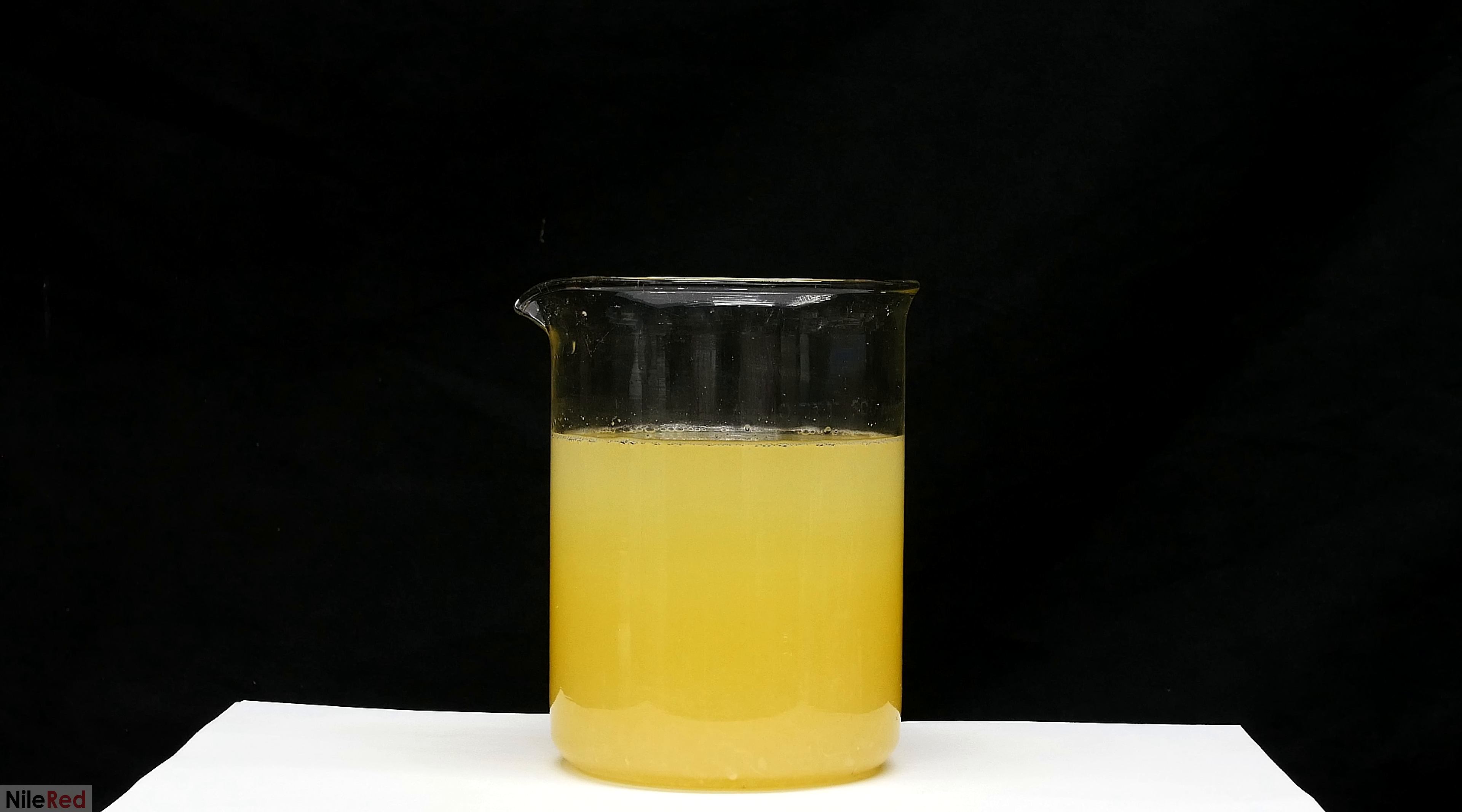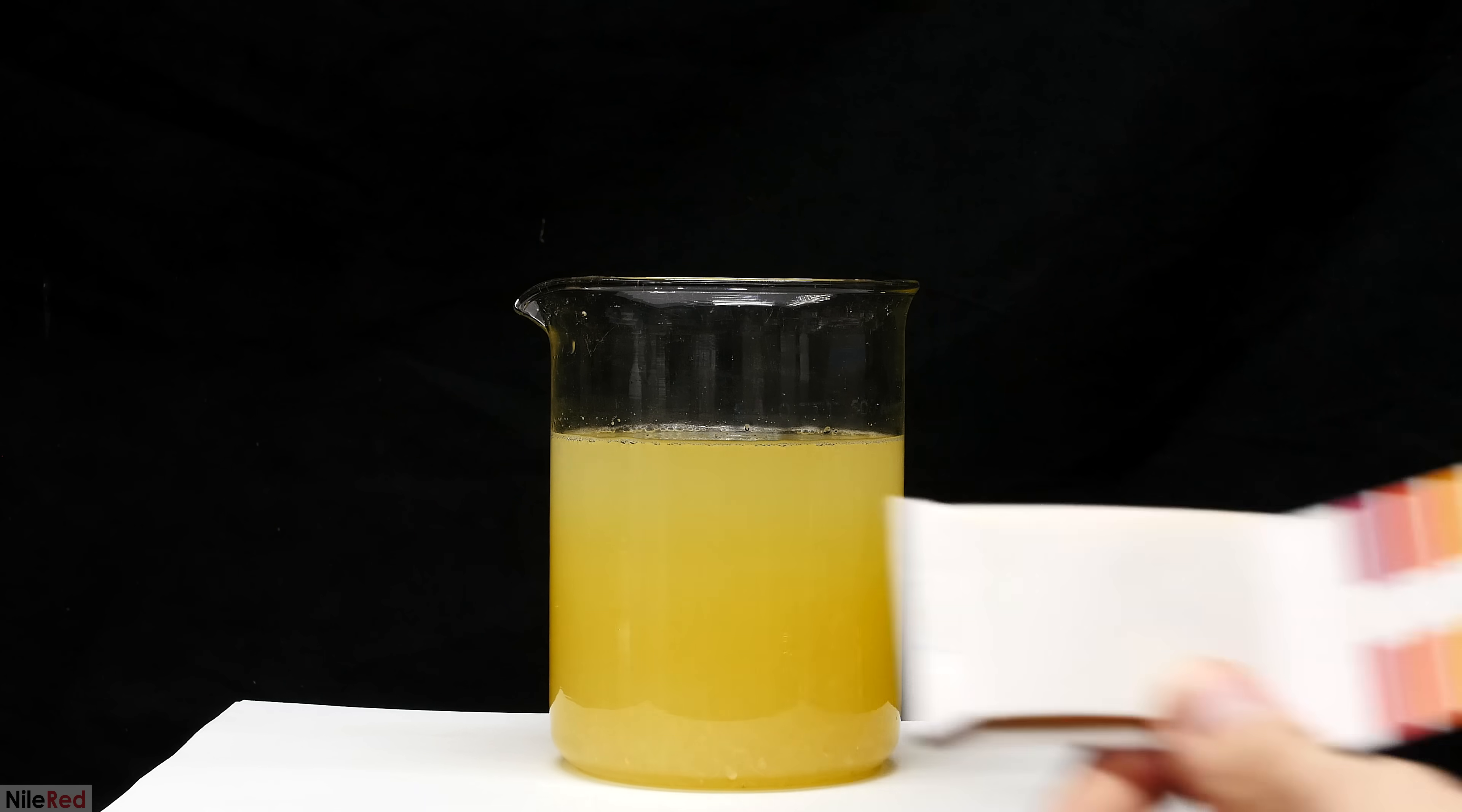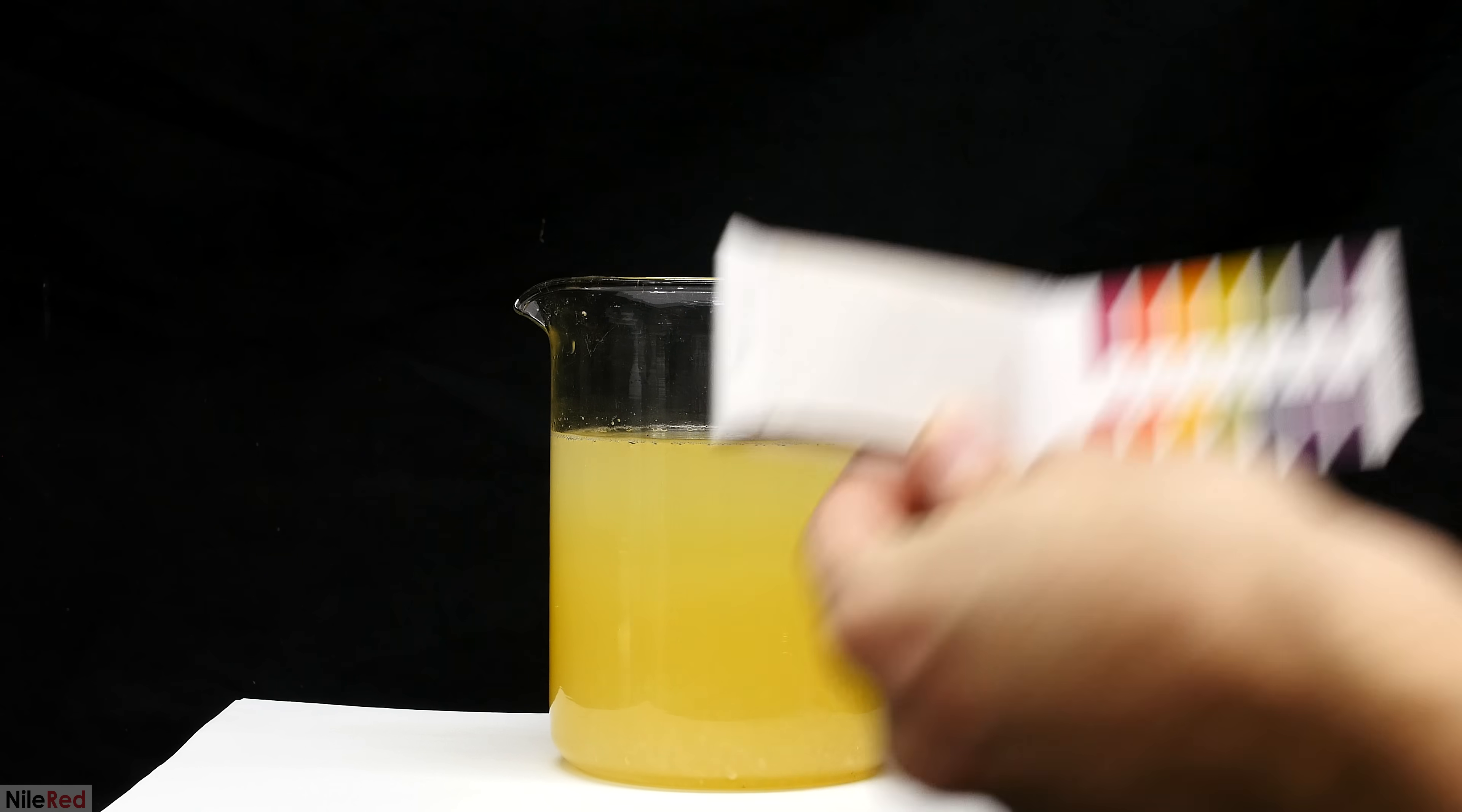Using some cheap universal pH paper, I see that the pH is hovering between two and three. A pH around two or three is mildly acidic and this acidity is mostly due to citric acid.